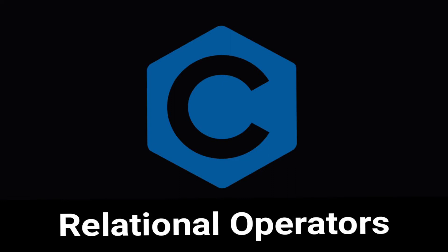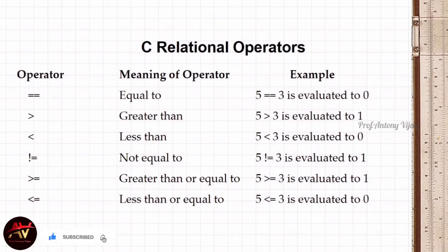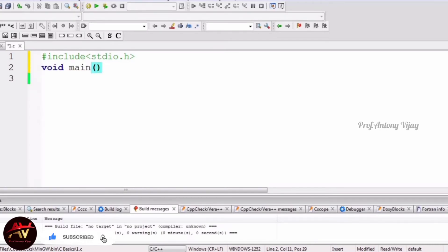Relational operators are used to find the relationship between two variables. These include: equal to, greater than, less than, less than or equal to, greater than or equal to, and not equal to. A relational operator produces only 0 or 1 — if the condition is true it produces 1, otherwise 0. For example, 5 == 3 is false so it produces 0; 5 > 3 is true so it produces 1.